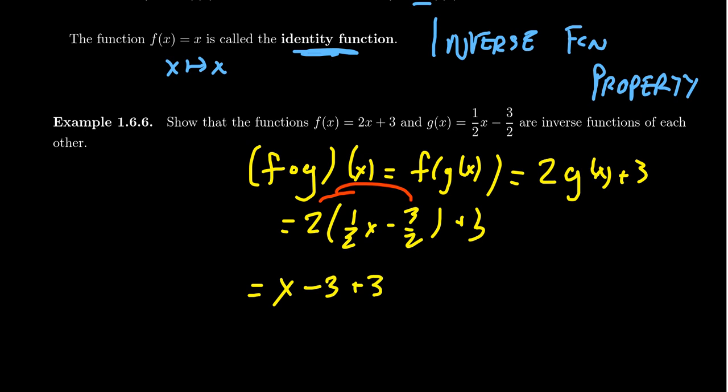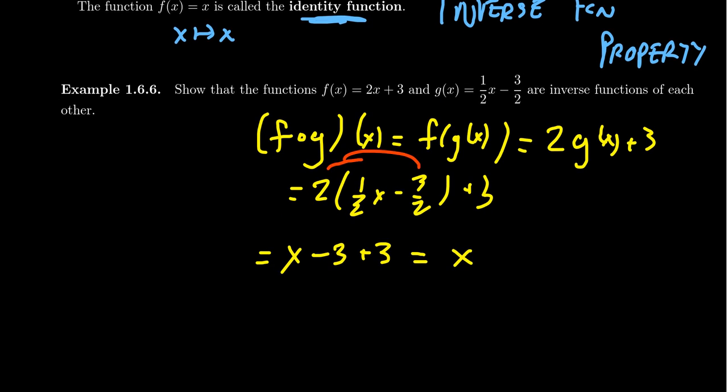What did we say a moment ago? Negative 3 plus 3, they cancel out. And you just get back an X. When you do F composed with G, it's as if nothing happened to the number. It just went on a big, big circle. On the other hand, we want to check both directions here.